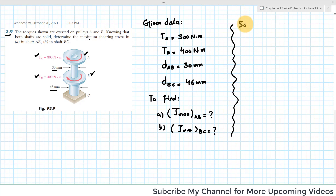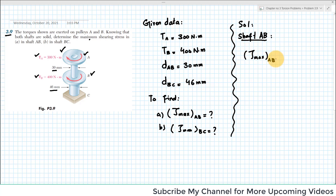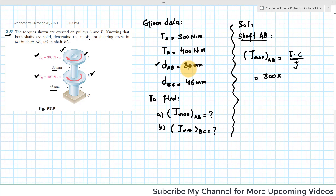Let's start with the solution for shaft AB. Shaft AB only experiences a torque of 300 Nm. The radius c is 30 divided by 2, which equals 15 mm.